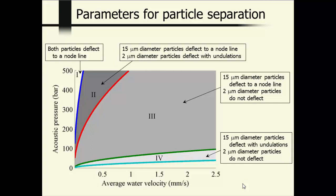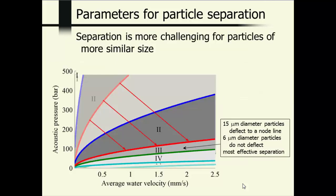Now, of course, if we make the particle sizes more similar, the separation becomes more challenging. And that's seen in this slide over here where I show the changes to the boundaries if we switch to trying to separate 15 micrometer and 6 micrometer particles. Now that region 3 becomes much narrower in allowable values of acoustic pressure and average water velocity.